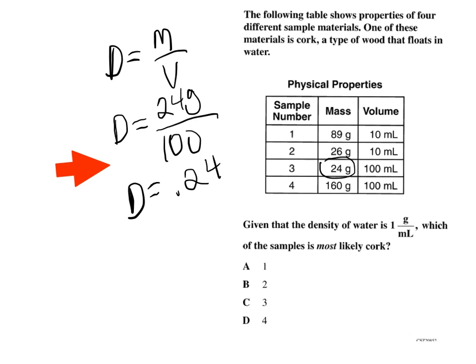And that's pretty cool, because once you see that, you know right away, well, that's less than 1, which means sample number 3 has to be our answer. And we know right away sample number 3 is going to be cork.